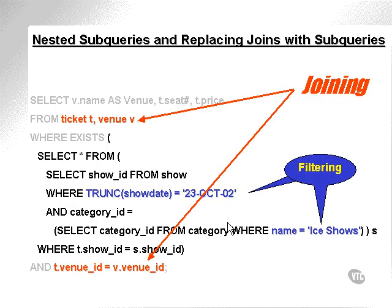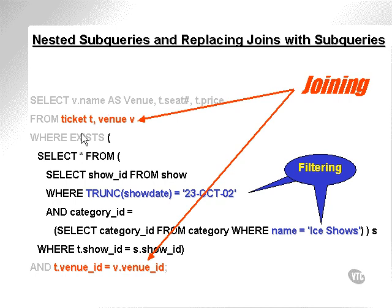Here's another example. We're selecting the venue and seat from the ticket and venue tables and joining them. The EXISTS clause here is going to attempt to filter some data out so that we join between fewer rows — in other words, we're trying to filter out some venues or some tickets. This SQL statement selects particular shows based on a show date and a category. So we've taken the join from ticket, venue, show, and category, and changed it into a join between just the ticket and venue tables.